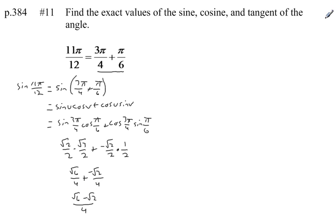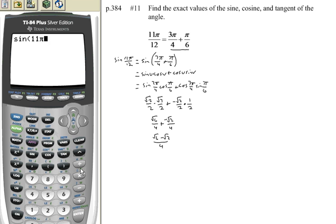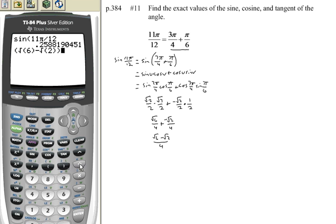We can verify this answer. If I type the sine of 11π/12 into the calculator I get a decimal. Then if I type in (√6 − √2) / 4, I should get the exact same decimal. That verifies my answer is correct.